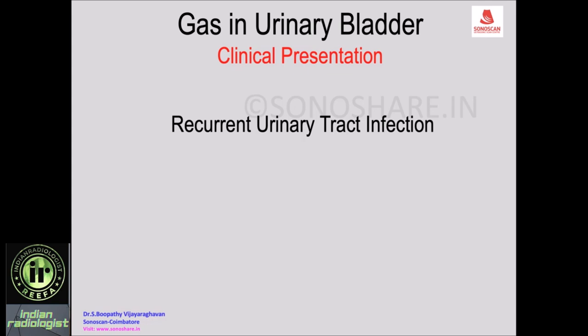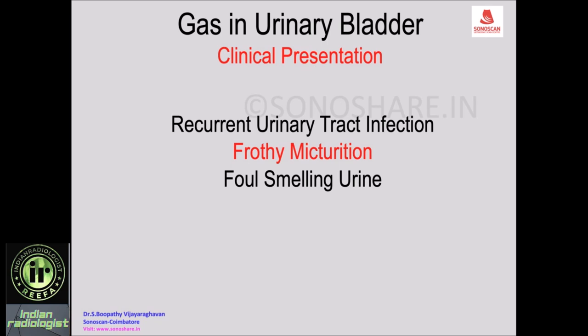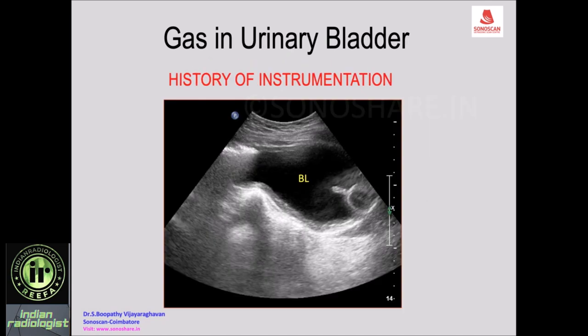The clinical presentations when a patient has gas in the urinary bladder include: recurrent urinary infection due to fistulous tracts or infection like emphysematous cystitis; frothy micturition due to the mixture of urine and gas; foul-smelling urine when there is a fistula because fecal masses may escape from the colon in a colovesical fistula; and intermittent obstructed stream due to intermittent obstruction of the urethra.